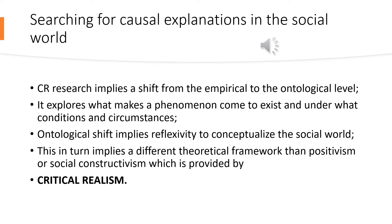When it comes to explaining how social phenomena come to exist, most scholars engage with explanations based on natural scientific observations which can be empirically proven, thereby omitting plausible explanations that can be uncovered by exploring the different underlying causal mechanisms that can trigger a social phenomenon — and which can in some cases remain untriggered and unobservable, yet their effects have the power to impact on the social world.